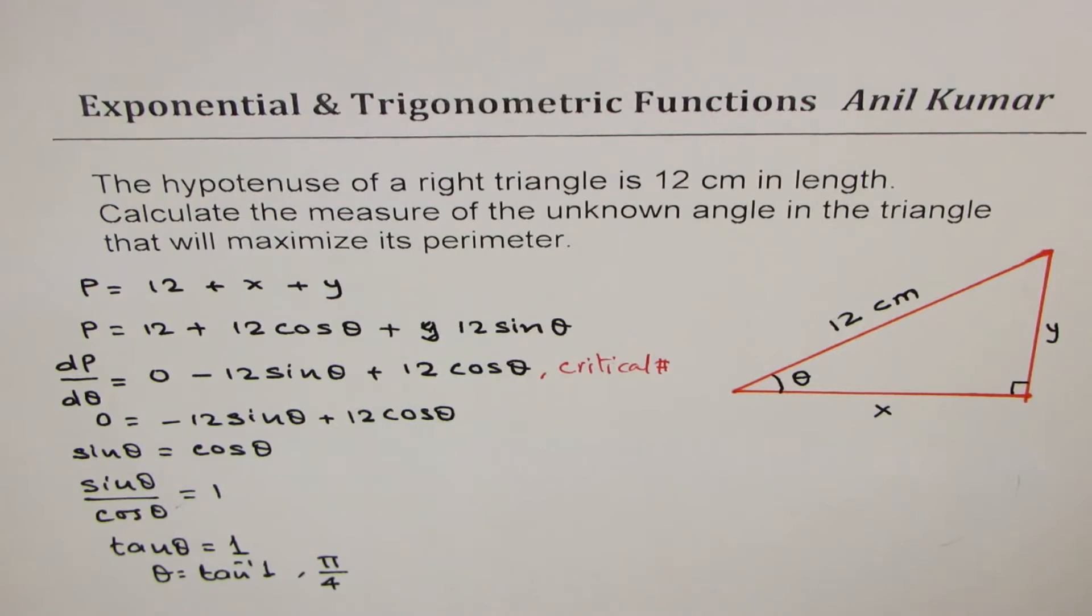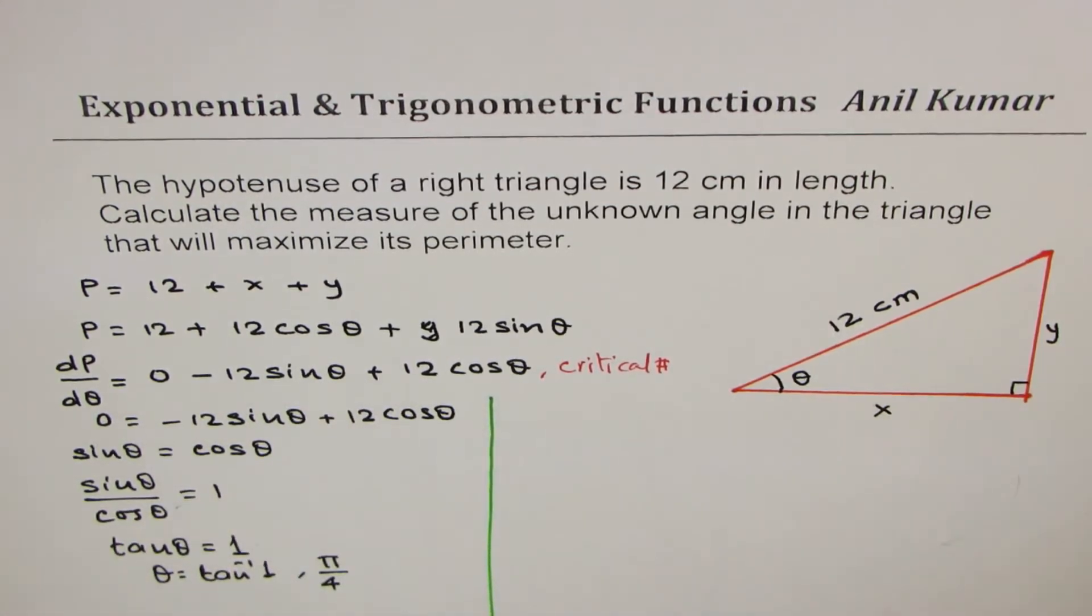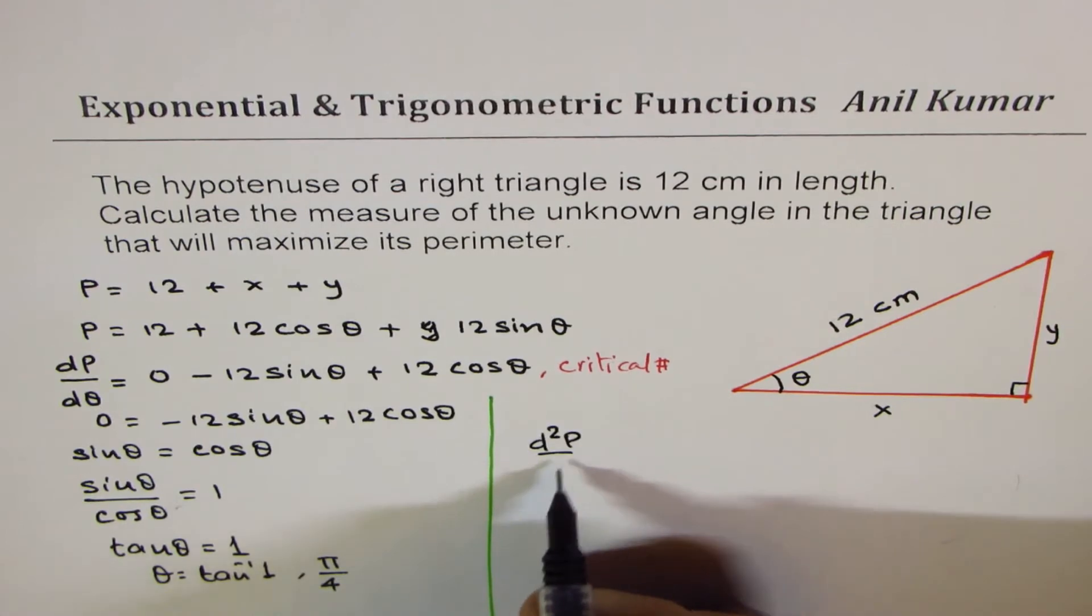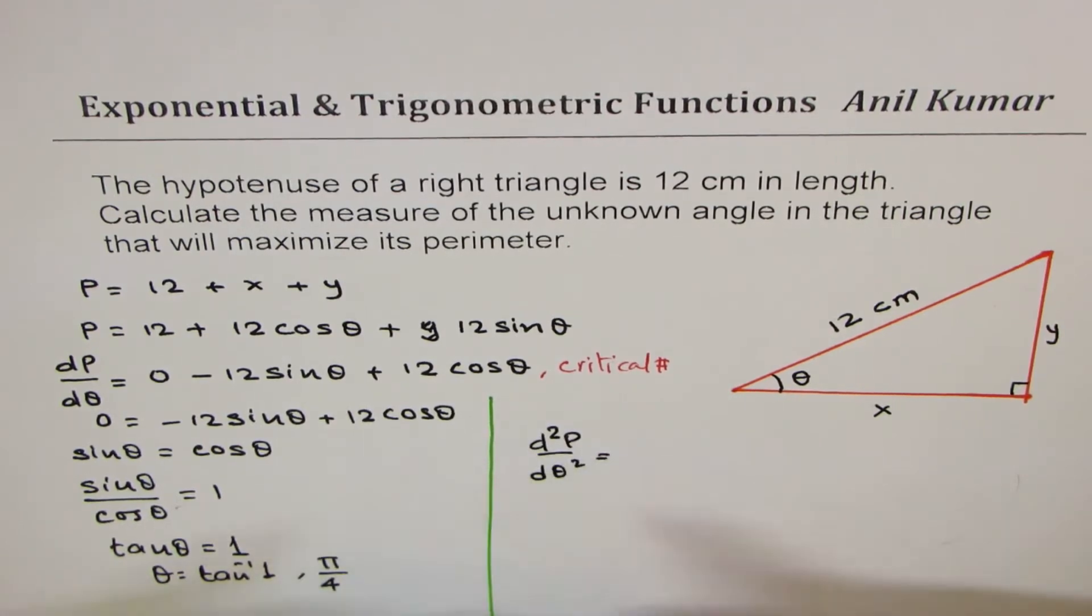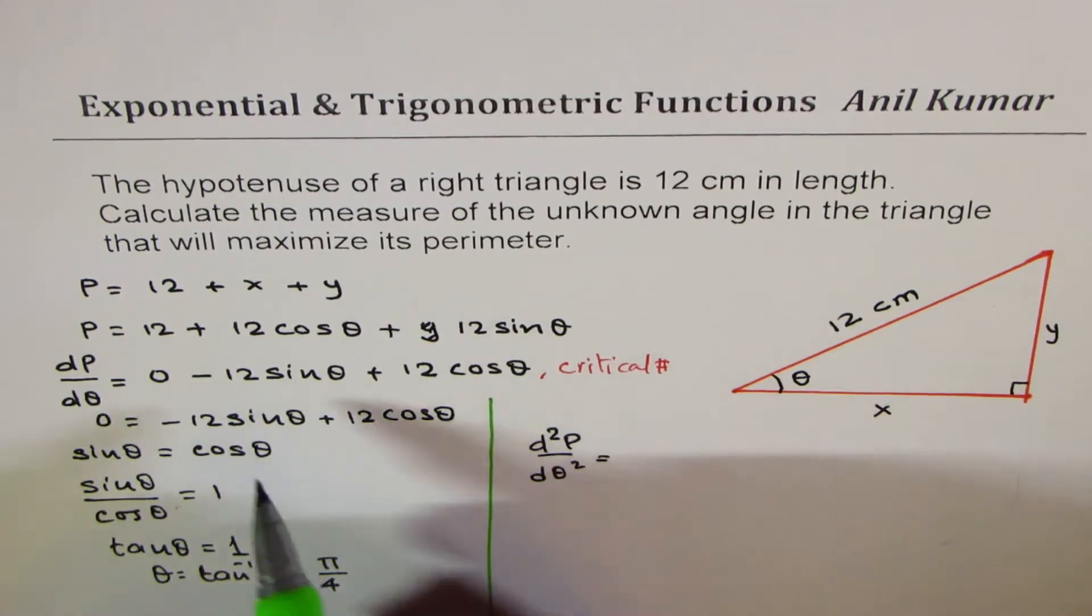Now whether it really gives you a maximum or a minimum, you can test it out by finding the second derivative of the given function. So let's find the second derivative d²P/dθ² equals to, so when you do second derivative, we are using this derivative, we are using this particular equation.